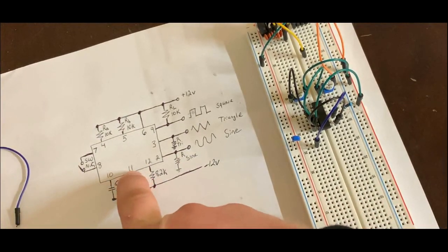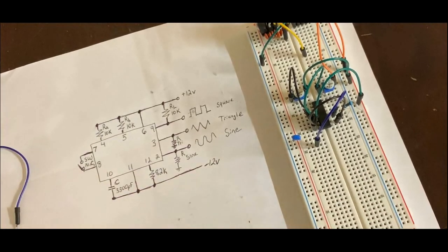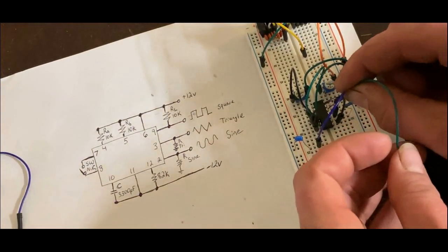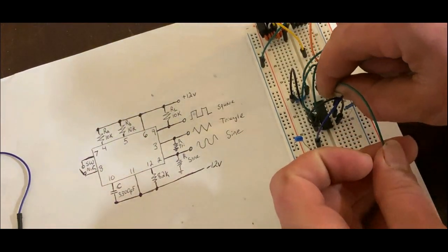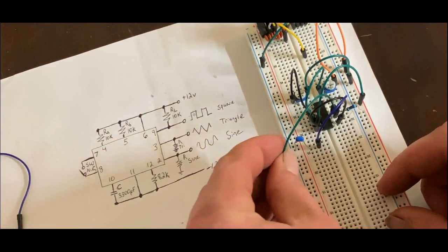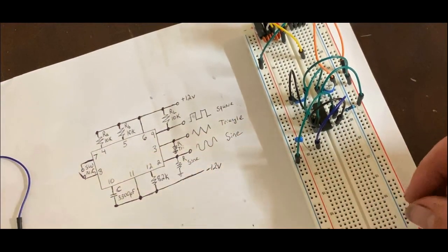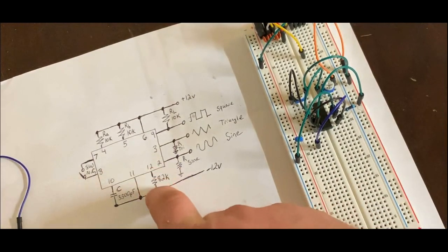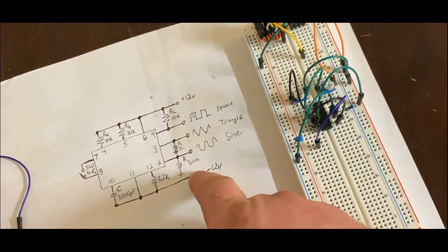The next one is pin 11. It goes straight to negative 12 volts. So, I'm going to put that there, straight to negative 12 volts. Pin 12 goes to negative 12 volts as well through an 82K resistor.